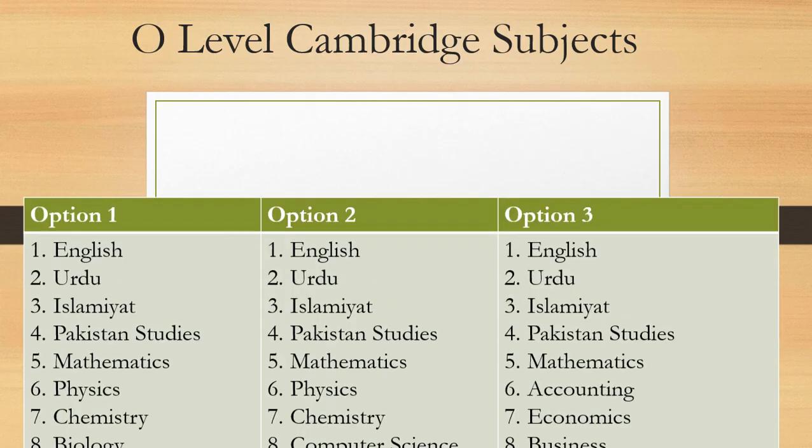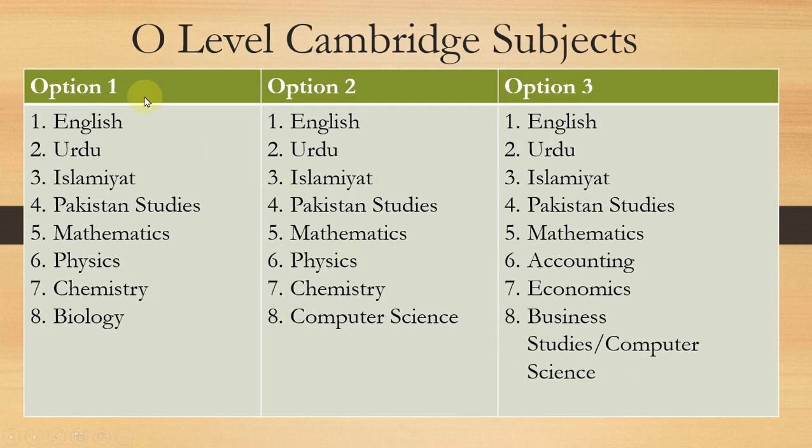Starting with the options offered in schools, Option 1 includes English, Urdu, Islamiyat, Pakistan Studies, and Mathematics. These five subjects are called core subjects and the rest are elective subjects. These are compulsory subjects in each option.